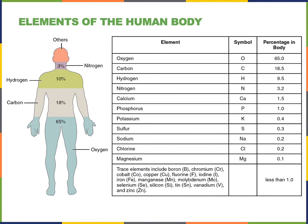An element is a pure substance that is distinguished from all other matter by the fact that it cannot be created or broken down by ordinary chemical means. All of the elements are on the periodic table of the elements. The smallest quantity of matter that still retains the properties of an element is known as an atom.